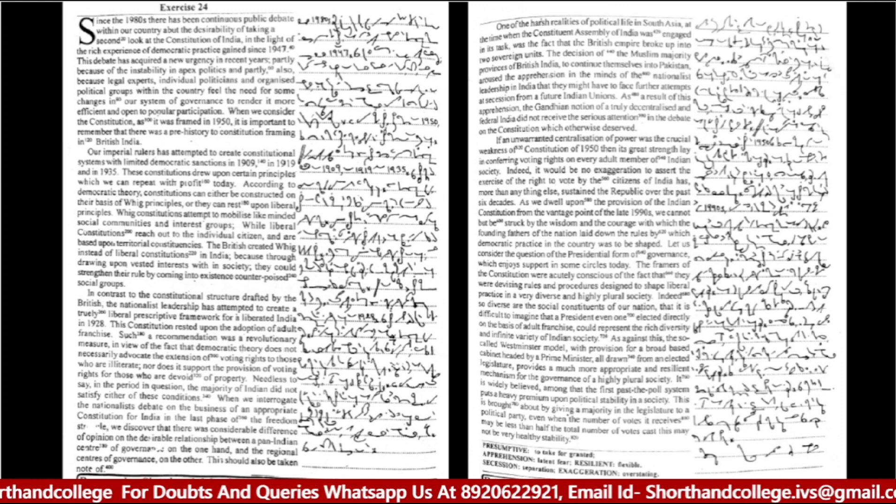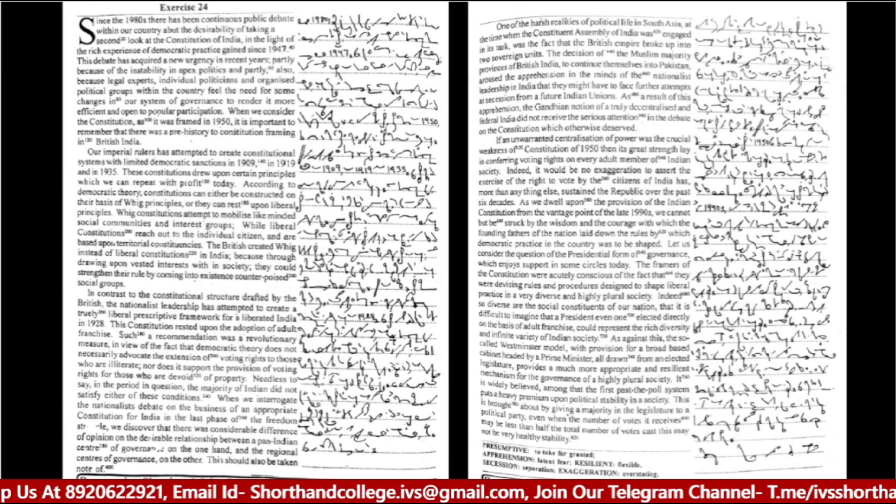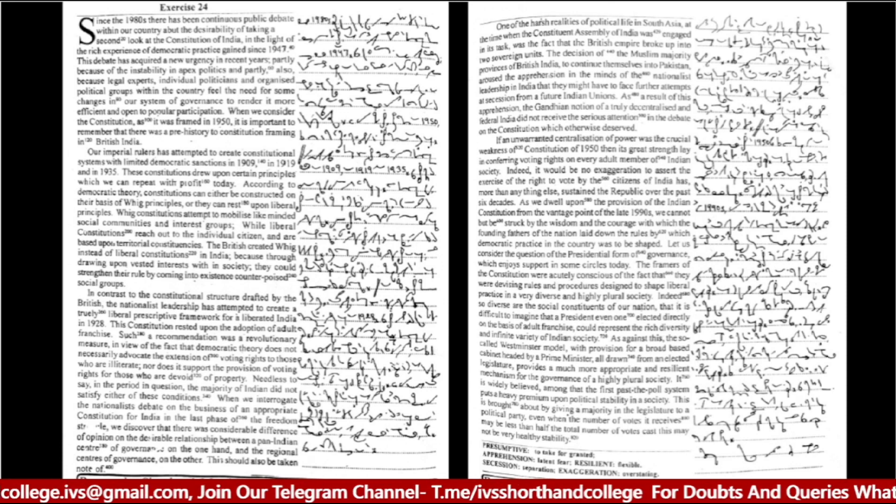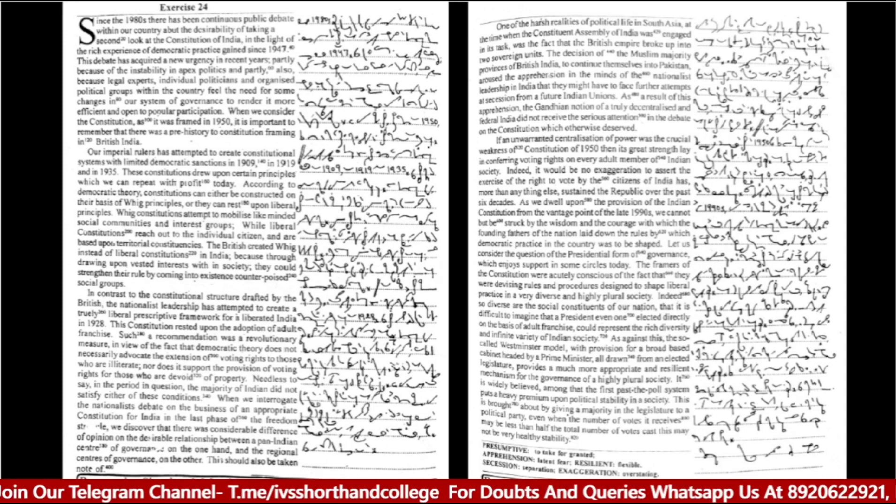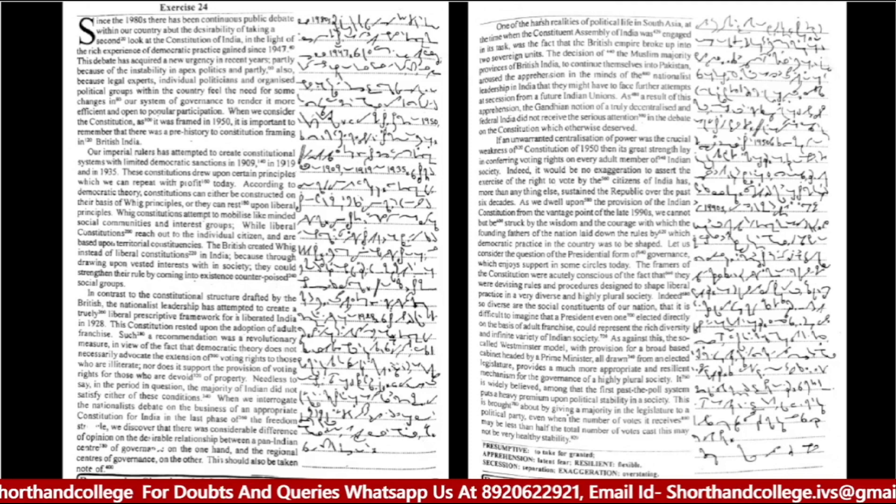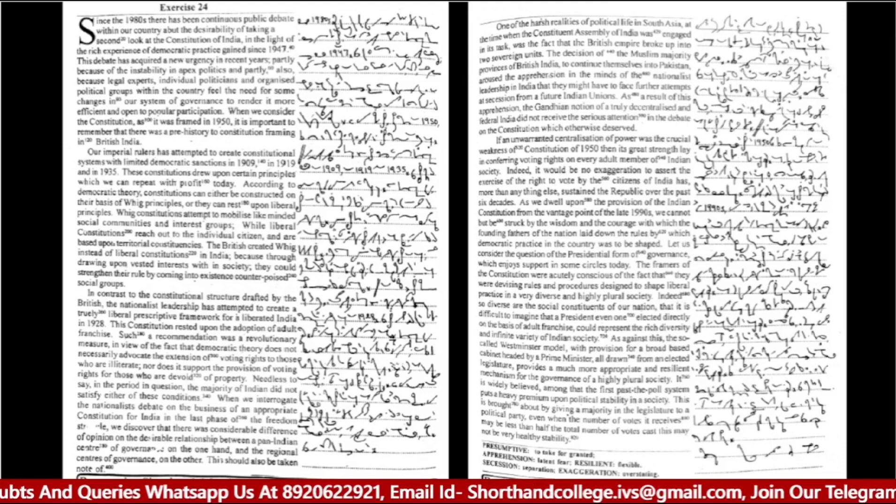Indeed, so diverse are the social constituents of our nation that it is difficult to imagine that a president, even one elected directly on the basis of adult franchise, could represent the rich diversity and infinite variety of Indian society. As against this, the so-called Westminster model with provision for a broad-based cabinet headed by a prime minister, all drawn from an elected legislature provides a much more appropriate and resilient mechanism for the governance of a highly plural society.